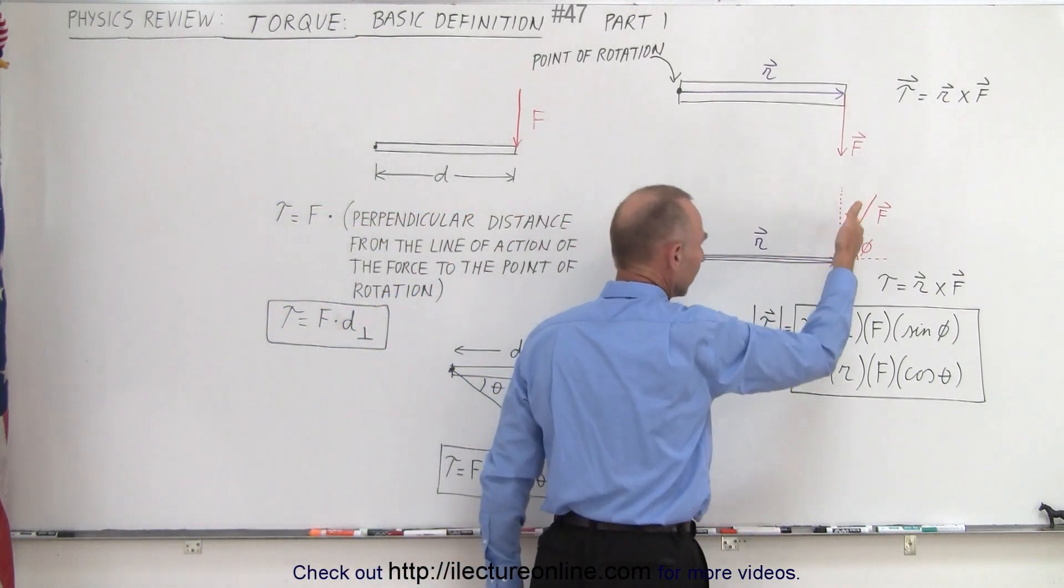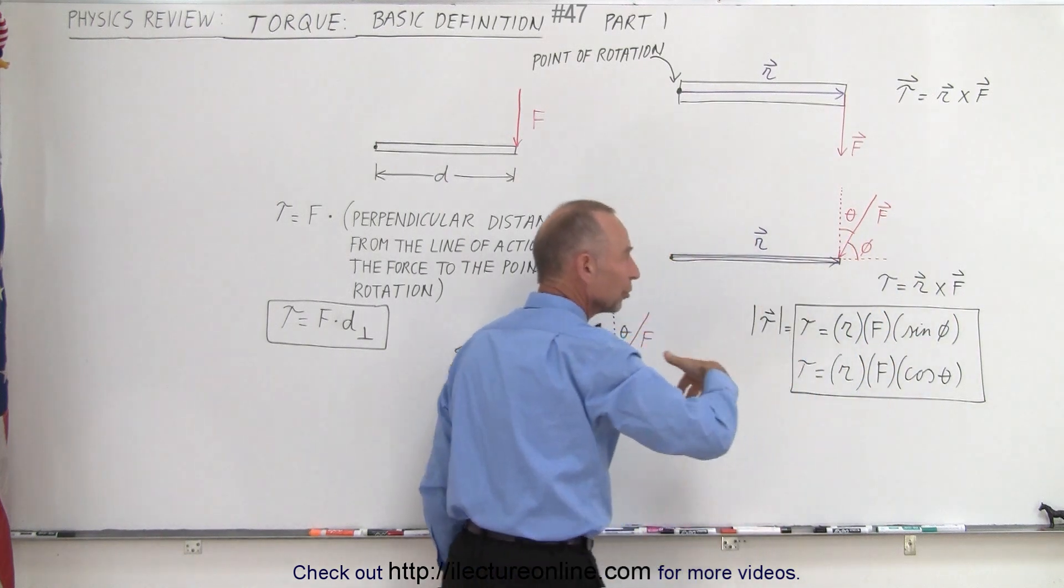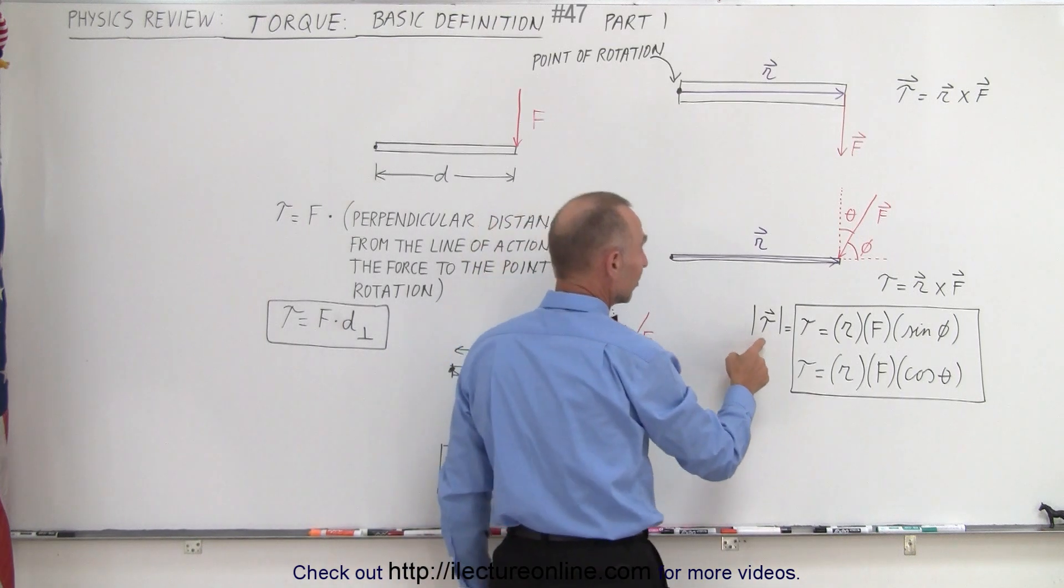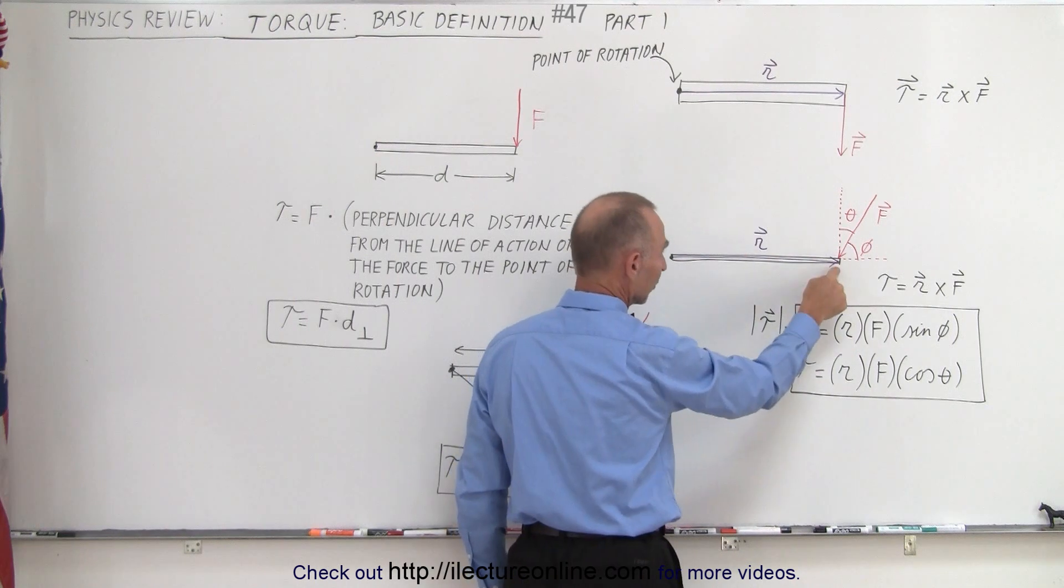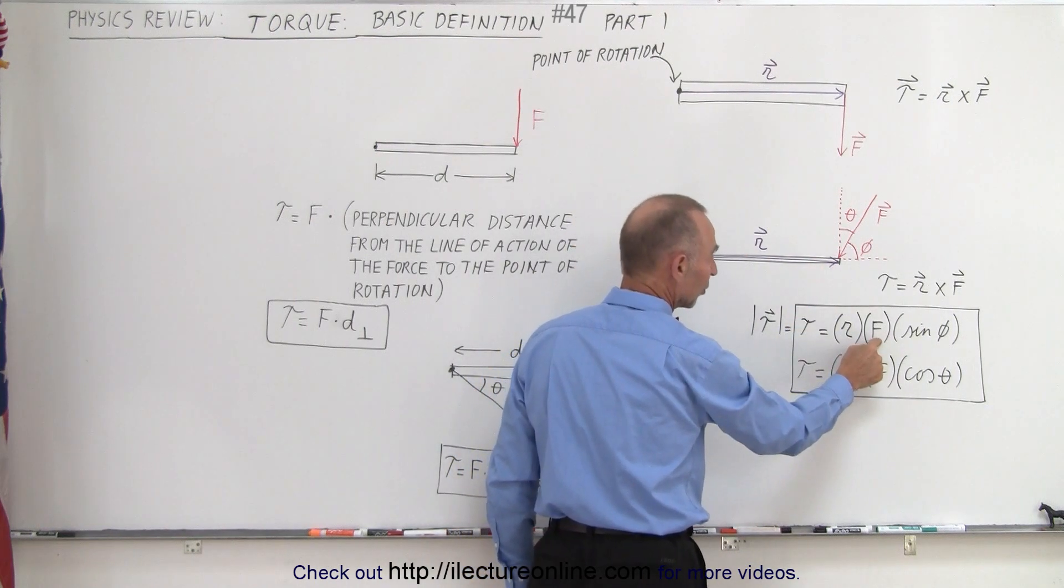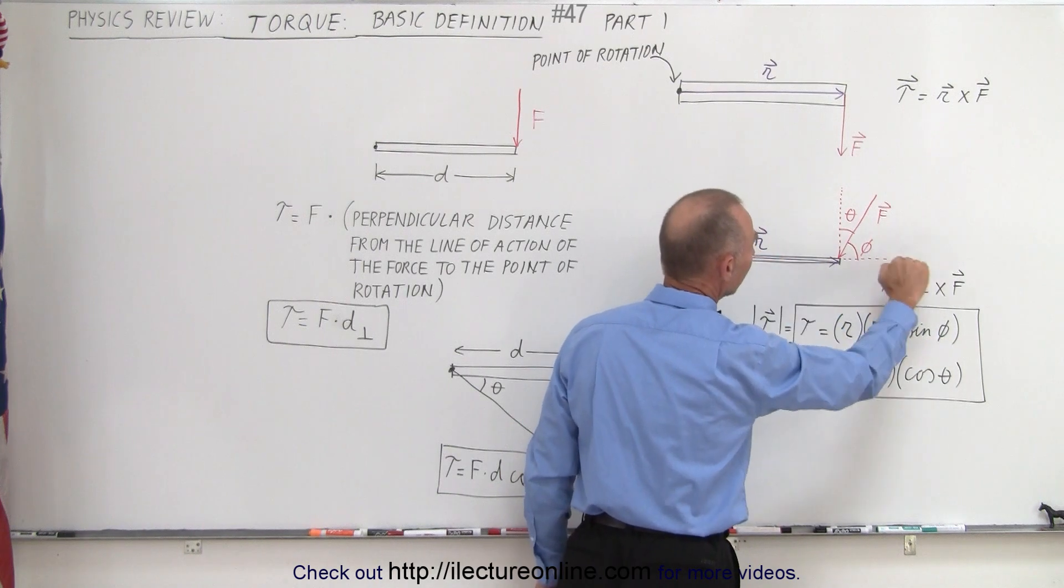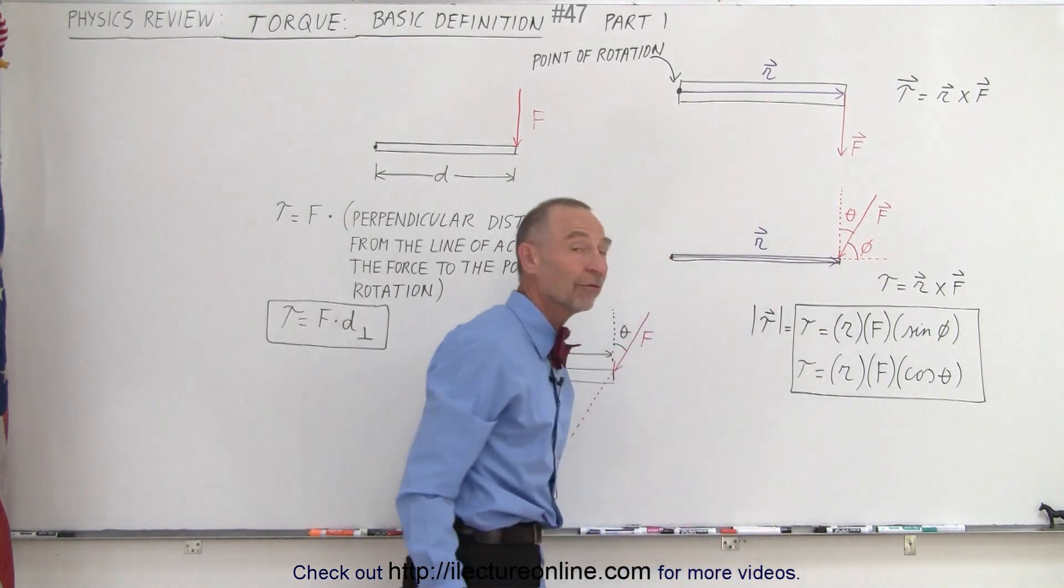If the force acts at an angle, you have torque equals r cross f, but the angle gives a different value. The magnitude equals the distance from the point of rotation to where the force acts, times the magnitude of the force, times the sine of the angle between the r vector and the force vector.